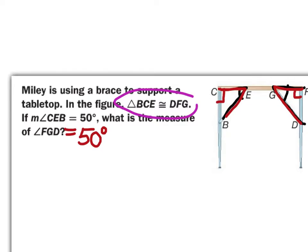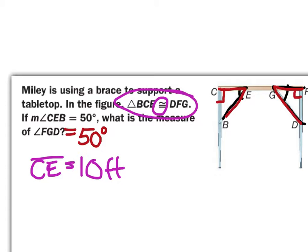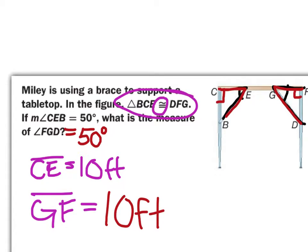Since these two triangles are congruent, let's say that side length CE was 10 feet. Then what would be the measure of GF? Well, GF — since both of these triangles are congruent — is going to have the same measure. It's going to be 10 feet, because it's correspondingly in the same position as CE. So GF will be the same measure.